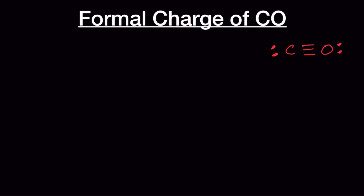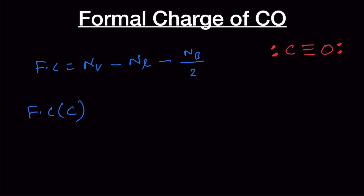Now let's calculate the formal charge for carbon as well as oxygen in carbon monoxide. The formal charge is equal to the number of valence electrons in the atom, minus the number of lone pair electrons in the molecule, minus the number of bond pair electrons divided by 2.